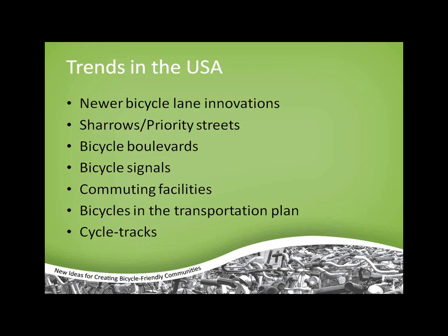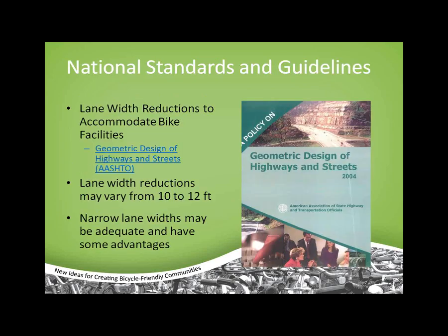Now we'll go through some U.S. trends: bike lane innovations, signals and traffic management for bikes, bike commuters, and cycle tracks — a specific type of bike facility in an urban setting. First, to set the framework, there are many national standards and guidelines for cycling that planners, engineers, and public officials use. The AASHTO standard — the American Association of State Highway Transportation Officials — includes the Green Book for Geometric Design for Highways and Streets, which addresses lane widths that can often be reduced to accommodate cyclists.